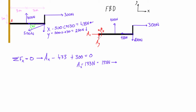That makes sense physically: we have 300 newtons pulling to the right and 433 newtons pulling to the left. The reaction has to make up the difference, which is 133 newtons pointing to the right. Essentially, with the sum of those two forces we're pushing this bracket into the wall, and the wall is pushing back on us to the right.